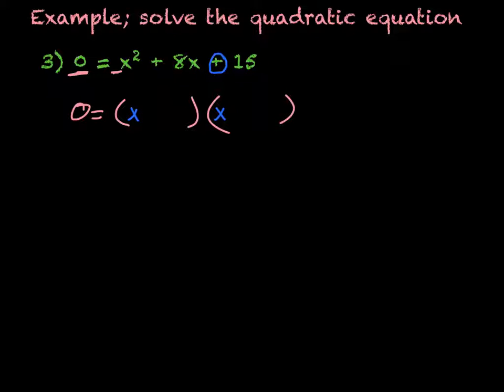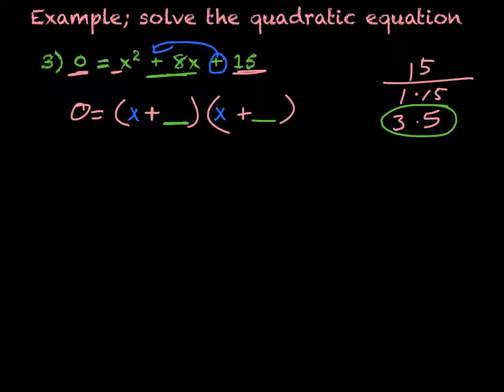My second sign is positive, so they're both going to be the same. Both going to be positive. So I'm going to have x + and x +. And then from there, I need to figure out what I need to put in here. So I'm going to come over here and do my factoring of 15. 1 times 15, 3 times 5. And then they need to add together to get 8, positive 8. So that would be 3 and 5. So I'm going to put in 3 and 5.